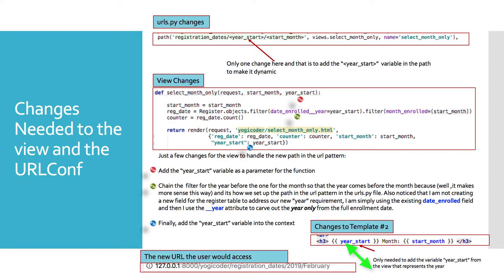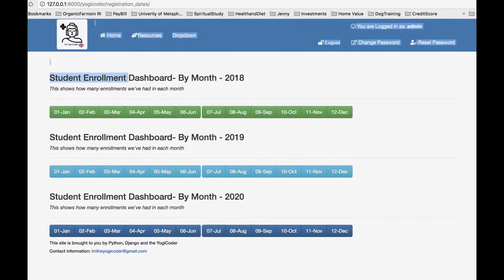The only changes to Template Number Two are inserting the year alongside the month. Instead of just showing the month corresponding to 2018, we now show the year dynamically as well — so it'll display January 2018, January 2019, or January 2020, etc. The new URL the user accesses now has the year inserted between registration_dates and the month name — for example, /yogicoder/registration_dates/2019/february/ — to match the updated view and urls.py.